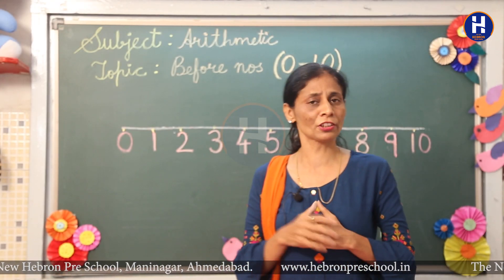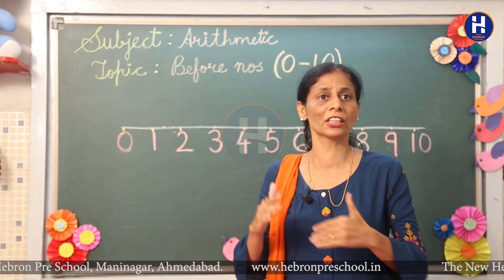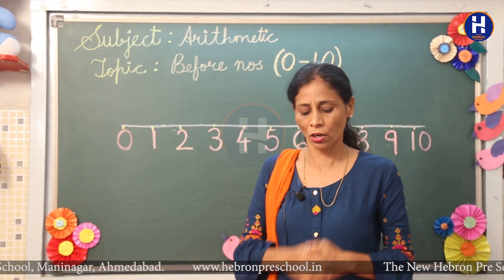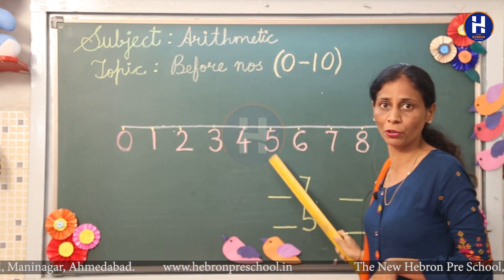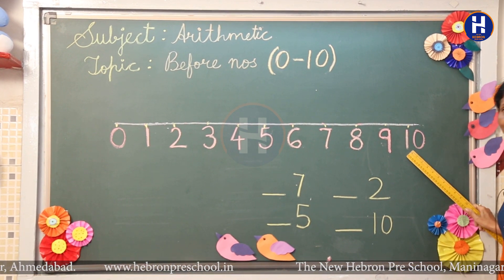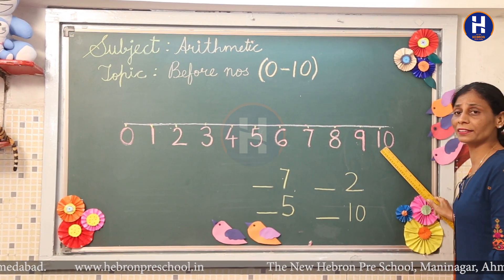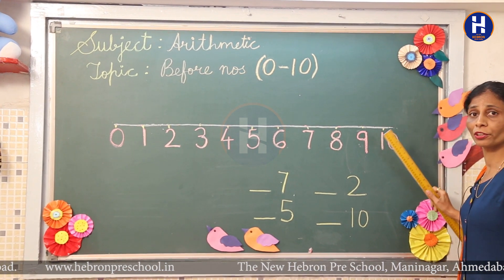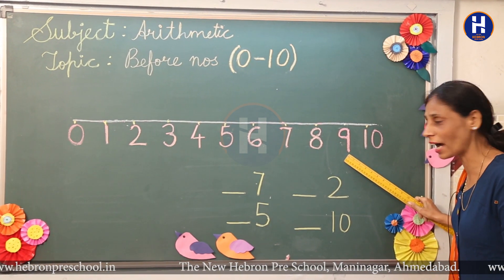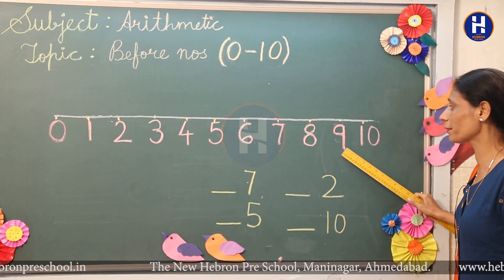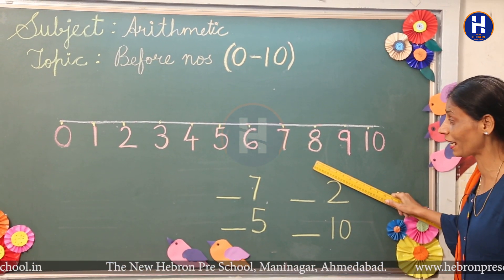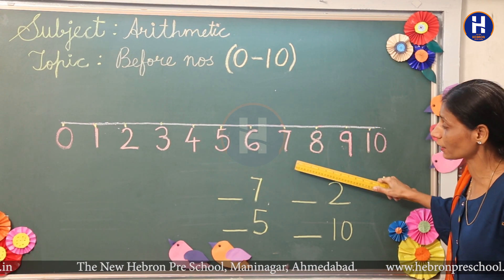Now, in the chart we saw how the animals were standing in the queue, one before the other. Now you look here on the board. This is number ten. What number is coming before ten? Ten ke before konsa number aa raha hai? Yes, number nine! Now what number is coming before nine? Yes, eight!